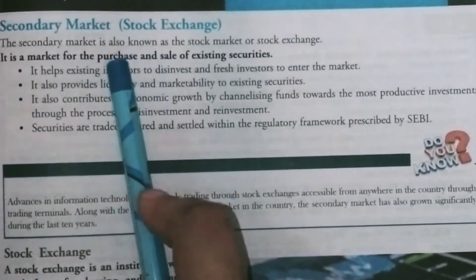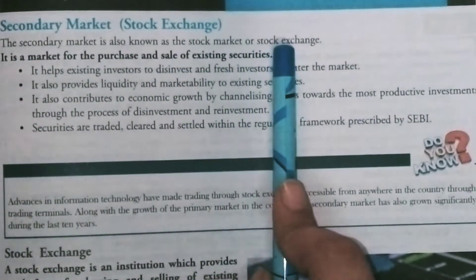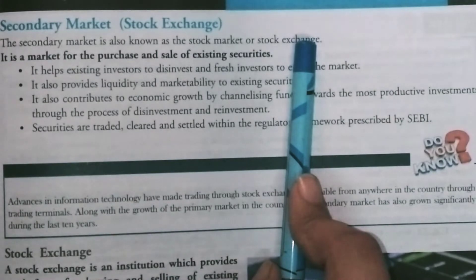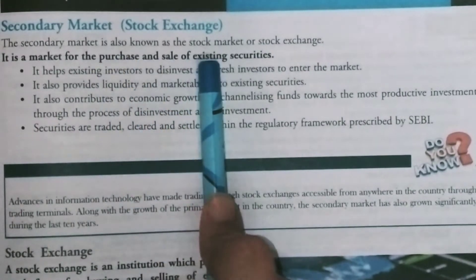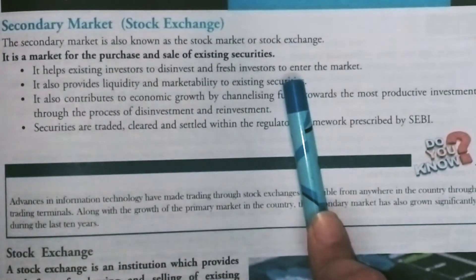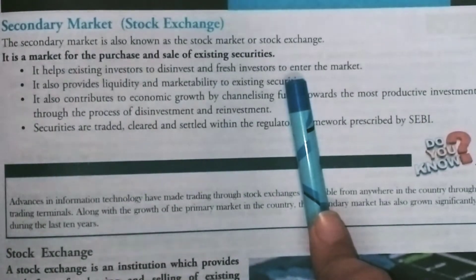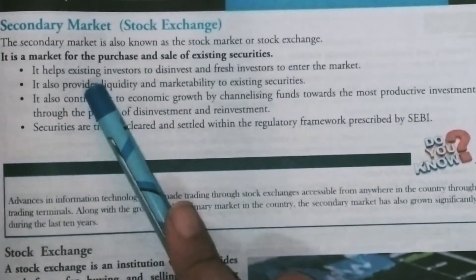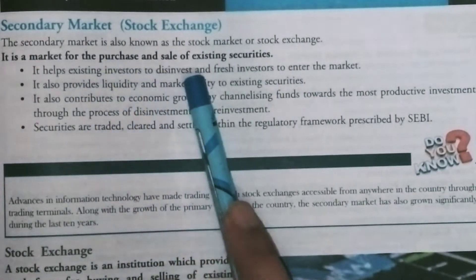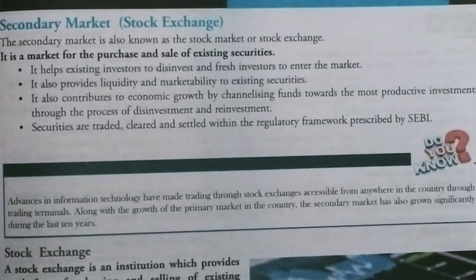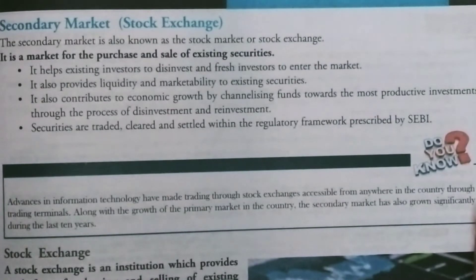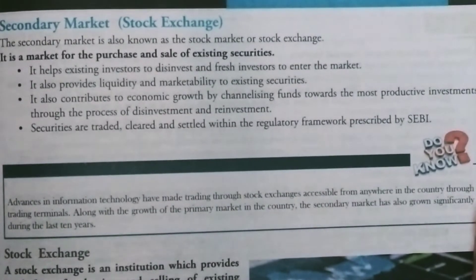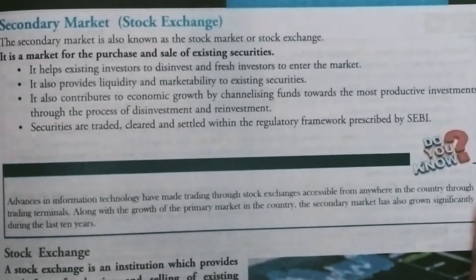The secondary market, which we also know as the stock market or stock exchange — you should be very clear about all these names. It is a market for the purchase and sale of existing securities. As introduced with capital market, it helps existing shareholders to divest and fresh investors to enter into the market. Sometimes you have shares but need to sell them, so it provides a market facility where you can sell existing securities and give other buyers an opportunity to enter.